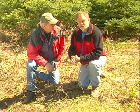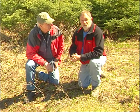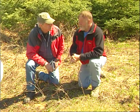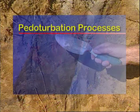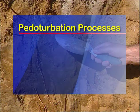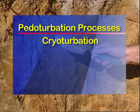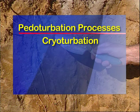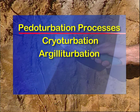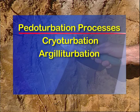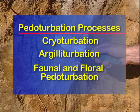Pedoturbation is a term we use for soil mixing. Ped means soil, turbate means to mix, and there are three pedoturbation processes. There's cryopedoturbation, which occurs in the cryosolic order where you have freeze-thaw action happening in the soil. There's argillipedoturbation, which occurs in the vertosols and that's clay mixing. And the other one is faunal pedoturbation, which we're seeing here.